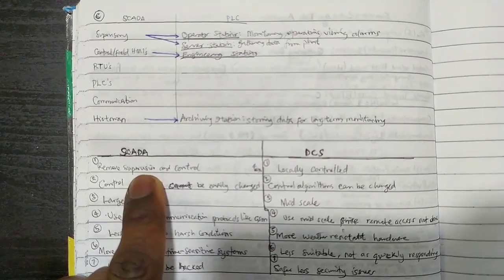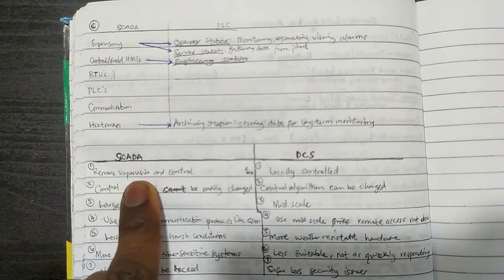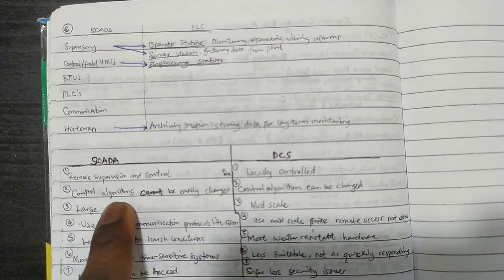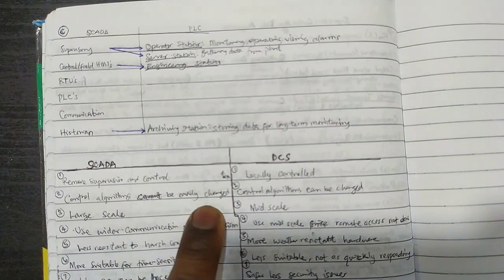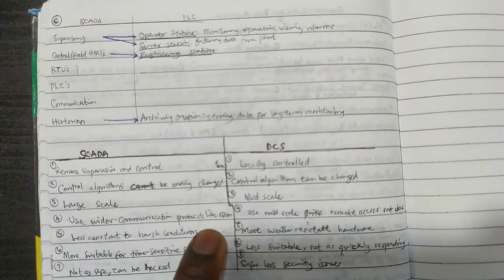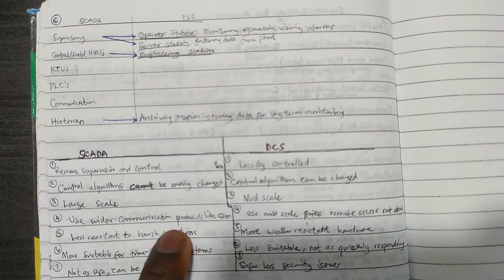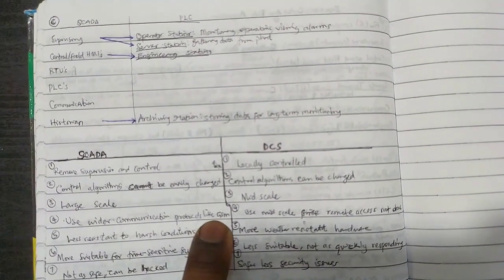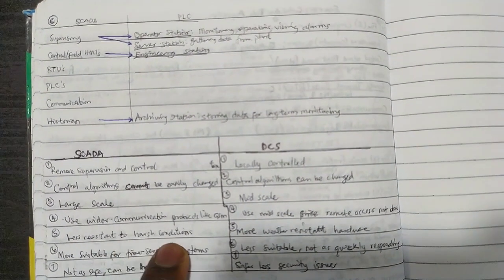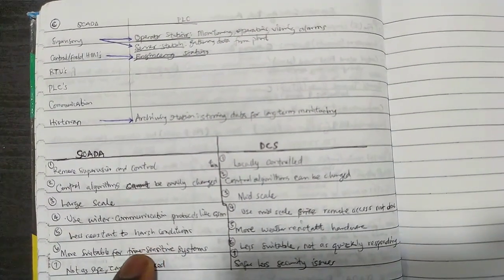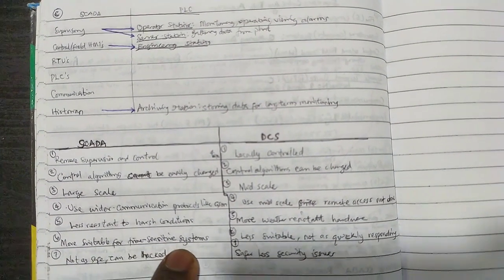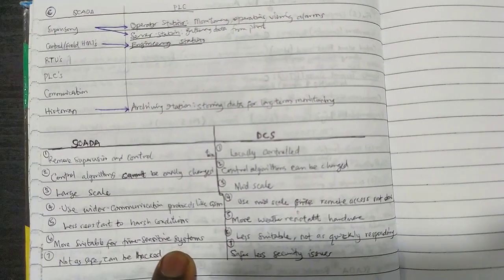SCADA has remote supervision and control, usually locally controlled. Control algorithms cannot be easily changed—it's the opposite. It's large scale vs mid-scale. This uses wider communication protocols like GSM, GPRS. Mid-scale protocols. It's less resistant to harsh conditions. We've said something like that before.